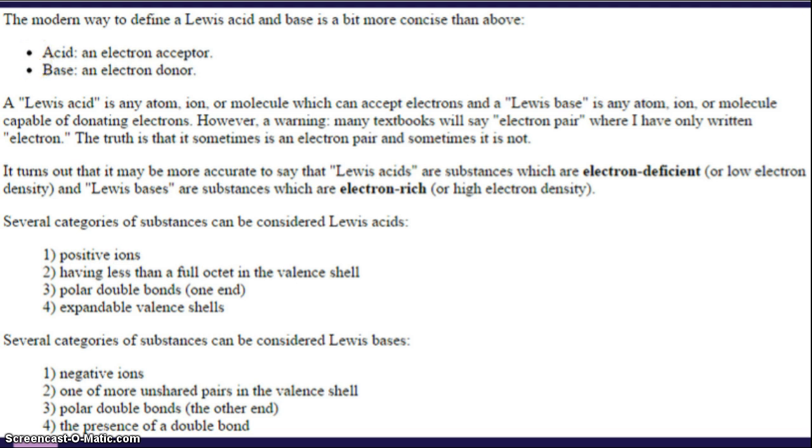It turns out that it may be more accurate to say that Lewis acids are substances which are electron deficient, or in other words, they don't have enough. Lewis bases are substances that are electron rich, or in a way, they kind of have too many. Several categories of substances can be considered Lewis acids: positive ions, having less than a full octet in the valence shell, polar double bonds, one end, and expandable valence shells. You do not need to write this down. This is the only thing you need to write down from Lewis. Several categories of substances can be considered Lewis bases: negative ions, one or more unshared pairs of valence shell, polar double bonds, the other end, and the presence of a double bond.